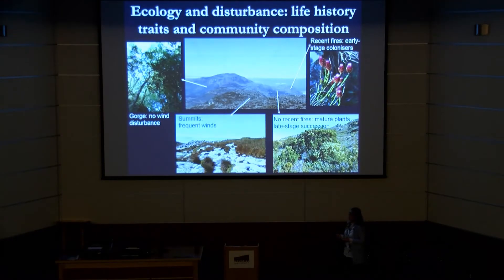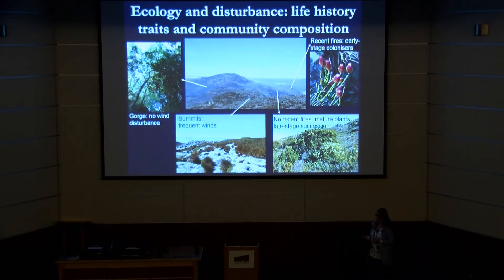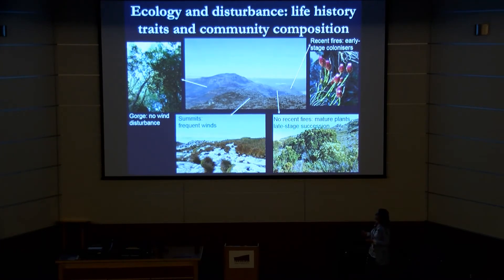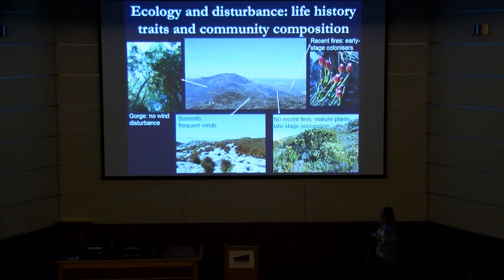A really classic example of modern disturbance is Table Mountain in Cape Town. On the west side of the mountain, there's very little wind, so you get big trees. On the summit, there's a lot of wind, so you get reeds - comparable to Mistaken Point, although a little bit more tropical.